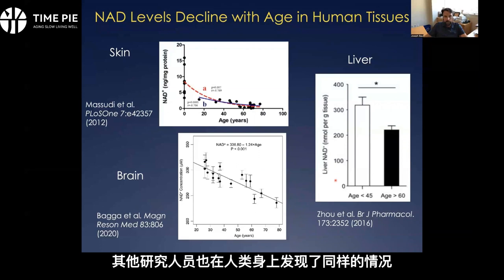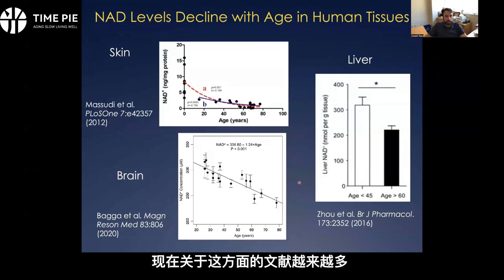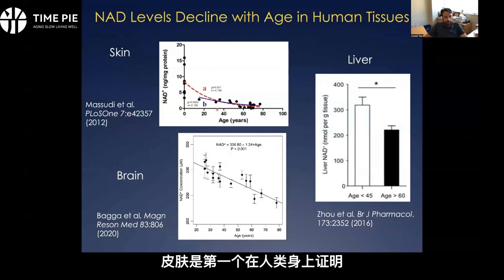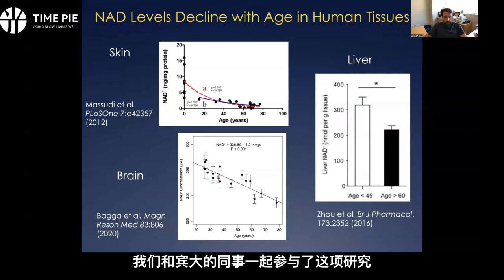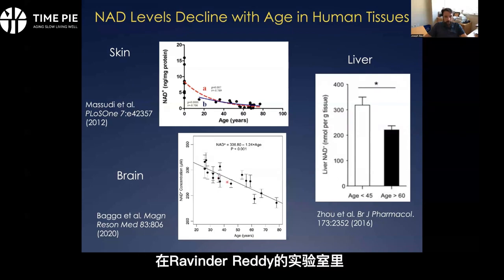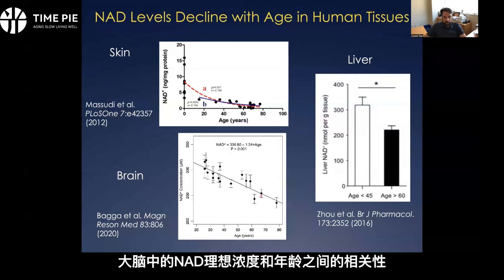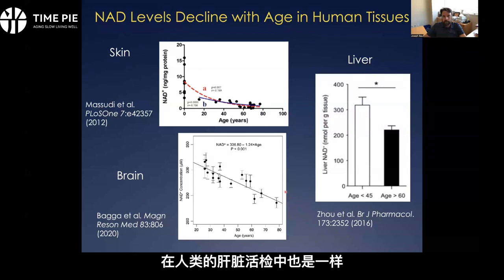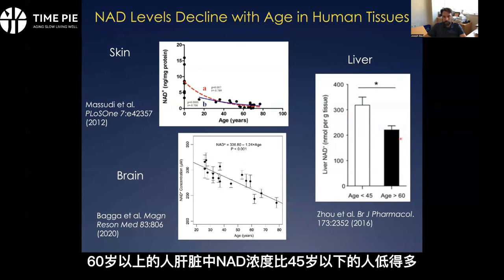Others have reported the same thing in humans. There's a growing body of literature on this — clearly it's true in the skin, which was the first tissue reported for humans. We were involved in a study with colleagues here at Penn and in Ravinder Reddy's lab, who were able to show this correlation between NAD concentration in the brain and age by magnetic resonance spectroscopy, and in liver biopsies from humans. The same thing has been reported where people over 60 have much lower NAD levels in the liver than people under 45.